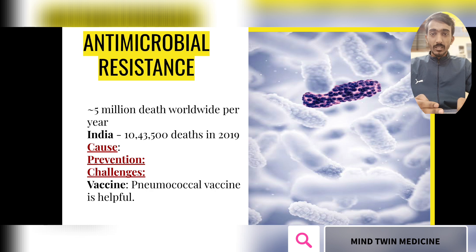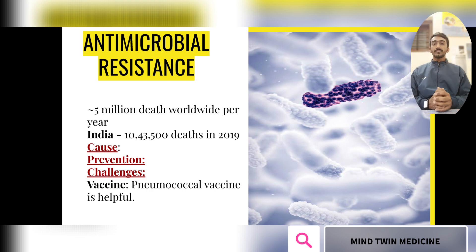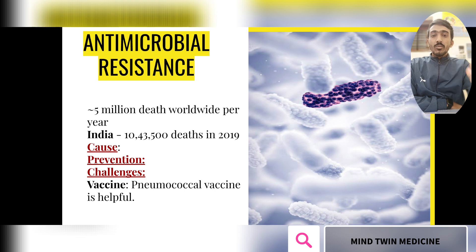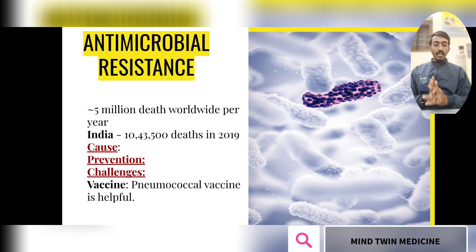The causes of AMR include overuse of antibiotic drugs — not only in humans but also in cattle, sheep, chickens, and other animals and birds. When antibiotics are given to animals, due to biomagnification and bioaccumulation, the antibiotic content increases in the body of those who consume them. At the same time, there is mutation of the microorganism. So the primary cause is overuse of antimicrobials in humans, animals, and even plants.